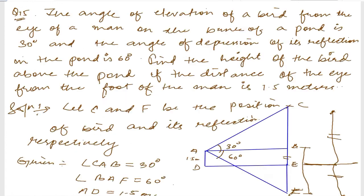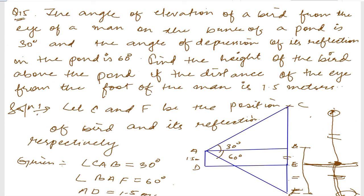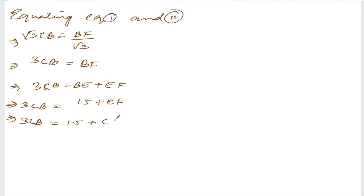Now, EF and EC must be the same, because the pond surface is the reflection point — the distance from the point to the bird and the distance from the point to the reflection must be same. So we can say EF equals CE. Instead of EF, write down CE. So 3CB equals 1.5 plus CE.